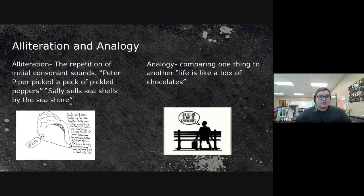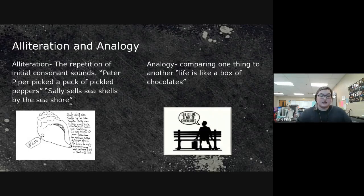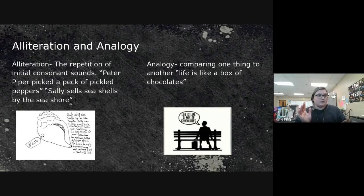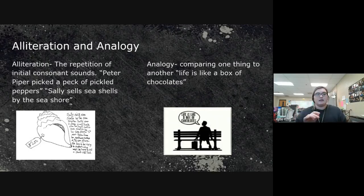Our first one is alliteration — the repetition of initial consonant sounds. Remember, consonants are everything but vowels, so no A, E, I, or U for alliteration. Examples: 'Peter Piper picked a peck of pickled peppers,' 'Sally sells seashells by the seashore' — any of those is alliteration; it's a repetition of that initial consonant sound.